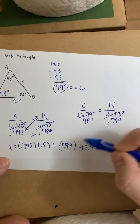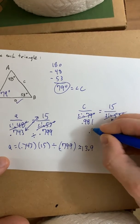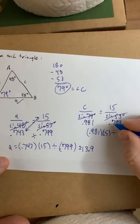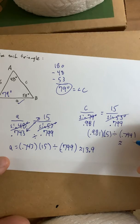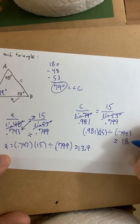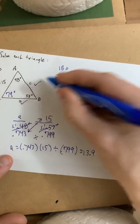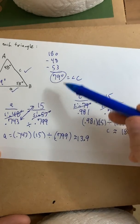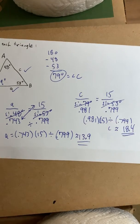And again, like you did here, you can cross multiply. So, 0.981 times 15. Divide that result by 0.799. And that should get you about 18.4 for side C. And there you have it. We have all three missing parts. We have solved the triangle. And that's example one.